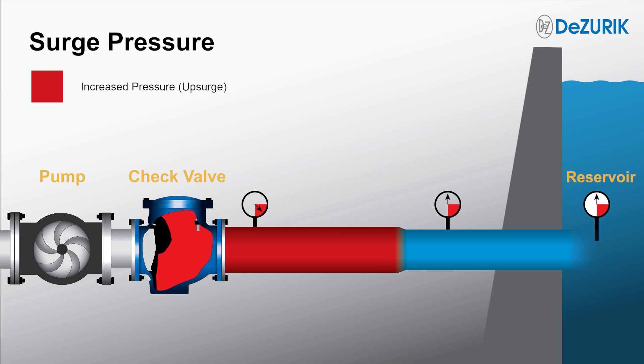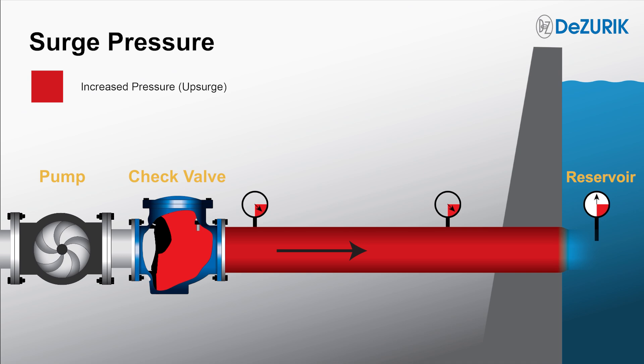The upsurge travels through the system toward the reservoir, temporarily bringing the entire system to an increased pressure. You'll notice a minor expansion of the pipe during the upsurge wave and a corresponding increase in pressure shown on the gauges.